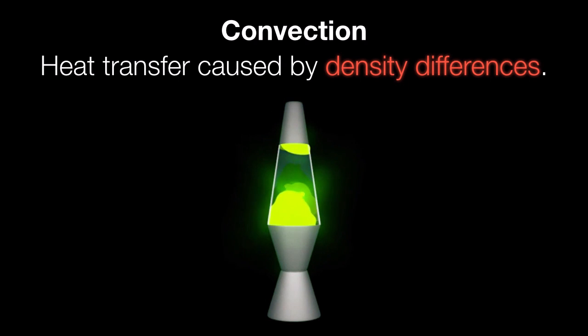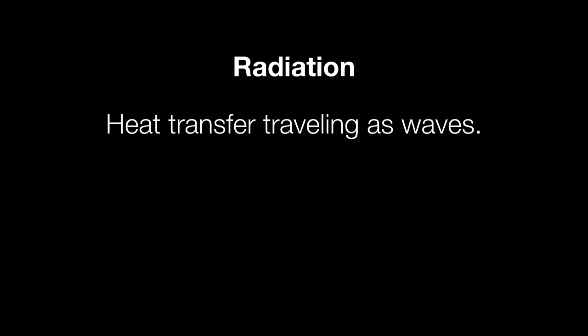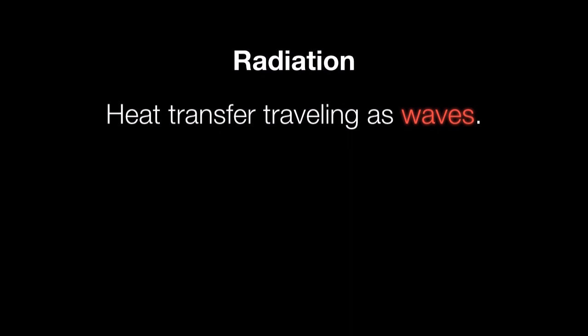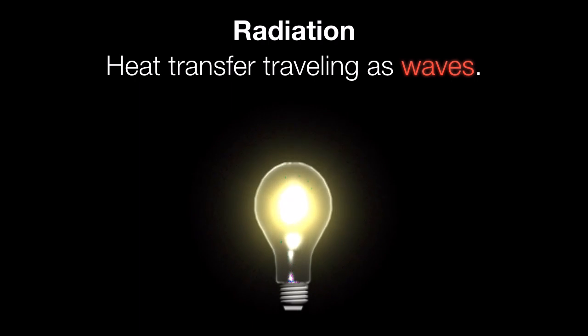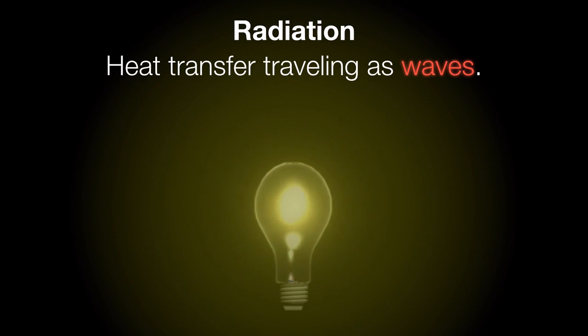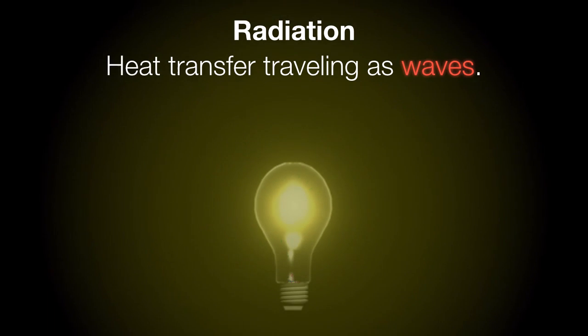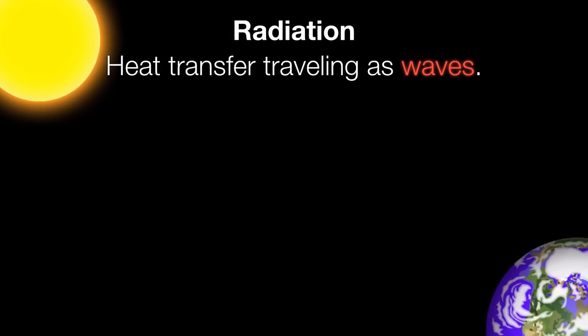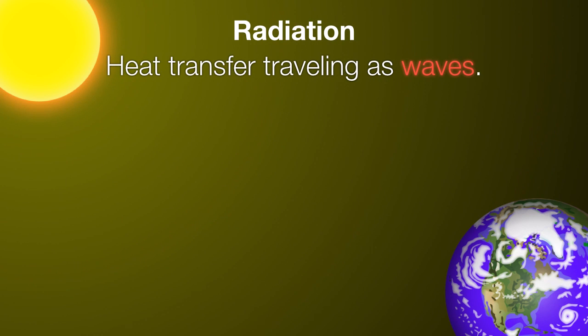Convection is all about heat causing things to become less dense and rise, and this is what causes many of the weather systems we experience on Earth. Finally, we have radiation — heat transfer in the form of waves, waves of energy radiating through empty space, through air, or through any substance. The key word for radiation is waves. Think of an old-fashioned incandescent light bulb: if you put your hands near it, whether on top or around the sides, you'll feel heat radiating off as little waves of energy. This is also the process by which energy travels from the sun to the earth. Radiation is important because it can take place even in a vacuum with no gases or liquids — this is how energy travels through space.